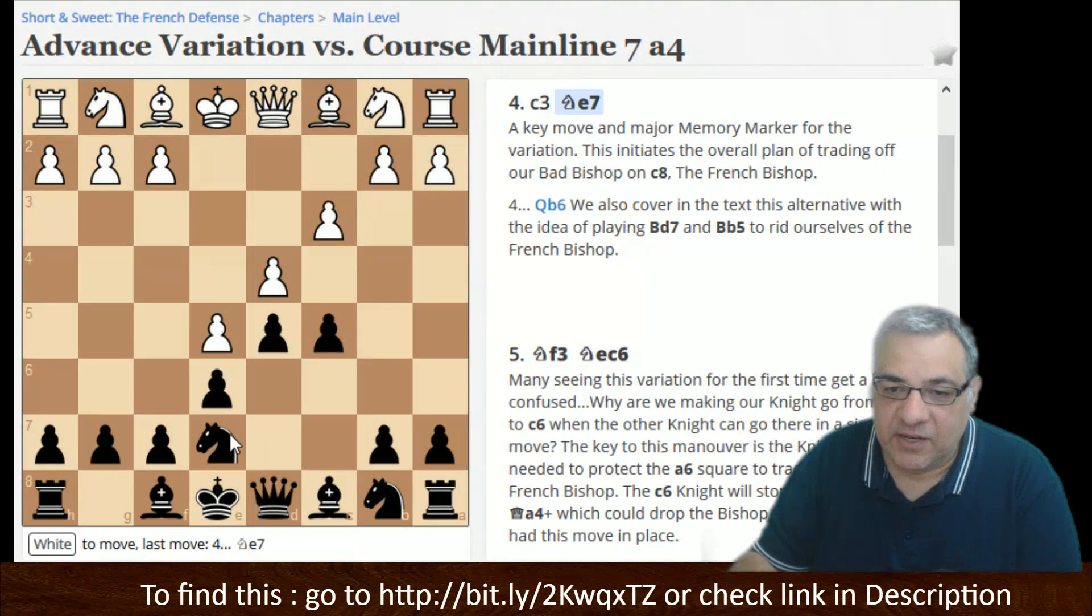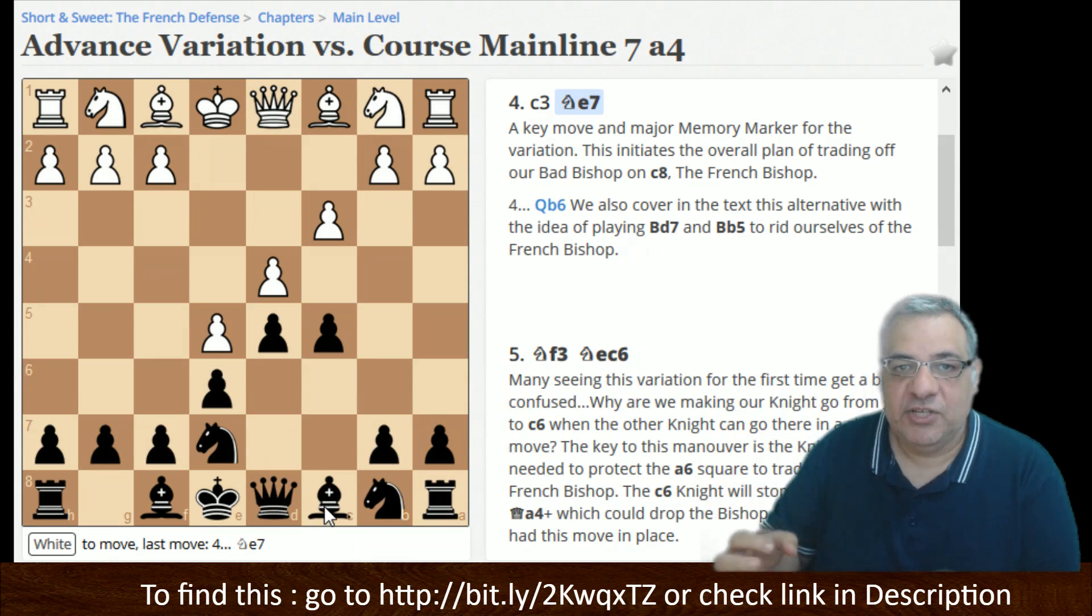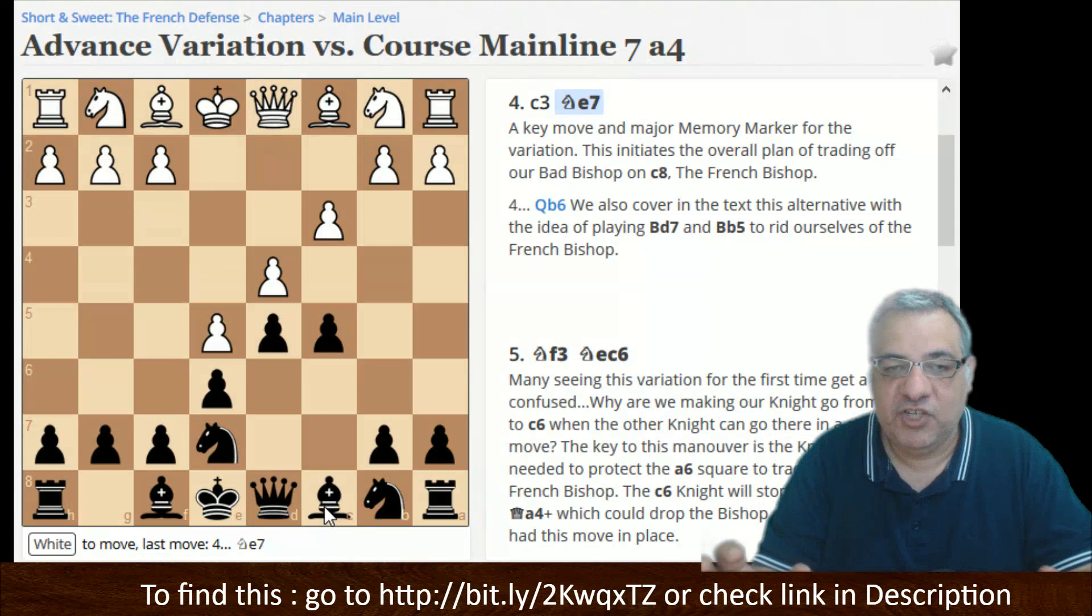So this way of playing at Ne7, we're aiming to get rid of the bad Bishop, and Brian has outlined that in many situations in the French Defense it's good to have a lighthouse, a kind of checklist of what you want to do. What part of the board you want to play on, what pieces you want to exchange off.